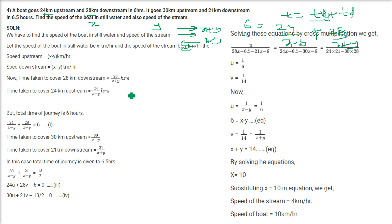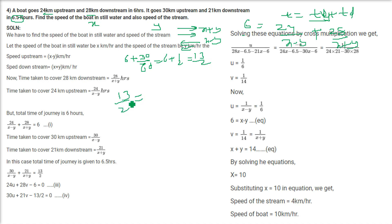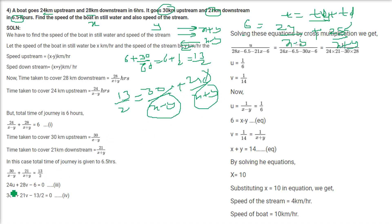The second condition: total time is 6.5 hours, which equals 13 by 2. This equals 30 by (X minus Y) plus 21 by (X plus Y). Let 1 by (X minus Y) equal U and 1 by (X plus Y) equal V. So: 24U plus 28V minus 6 equals 0, and 30U plus 21V minus 13/2 equals 0. Solving by cross multiplication gives U equals 1/6 and V equals 1/14.